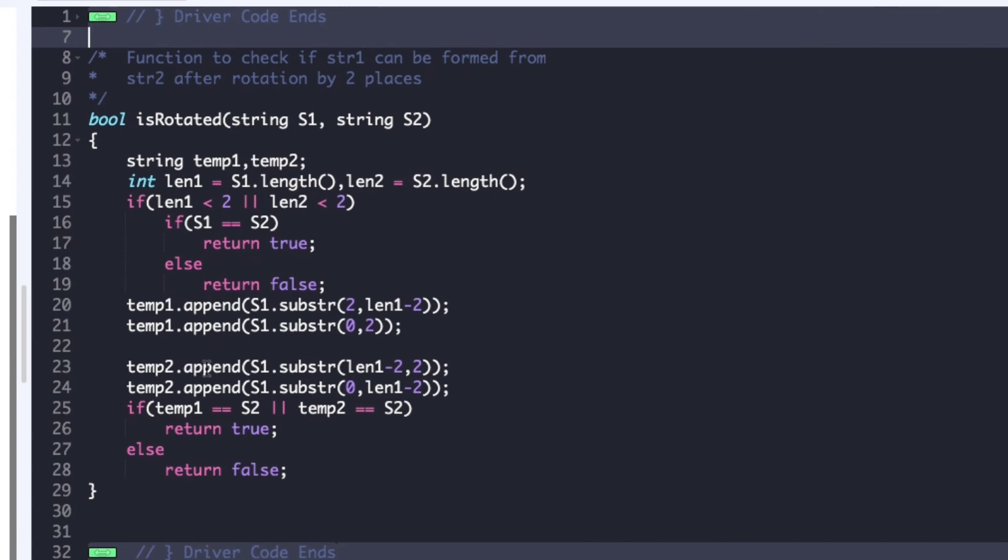Similarly we create the left rotation by first storing the last two characters of the string and then the remaining characters we append to the string temp2. At last we check whether either temp1 is equal to s2 or temp2 is equal to s2. If any of this condition is true then we return true else we return false.